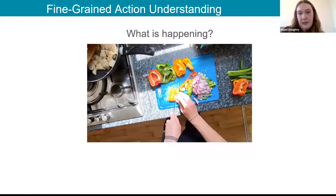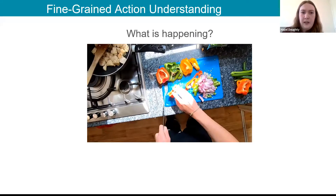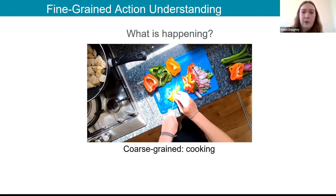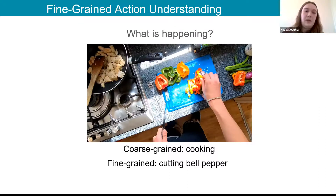Fine-grained action understanding means looking at individual object interactions in a video. At a coarse-grained level you could say the person's cooking or identify what dish they're cooking. Fine-grained understanding labels the action as 'cutting bell pepper,' distinguishing it from the same action with a different object like 'cutting onion,' or the same object with a different verb such as 'washing bell pepper.'